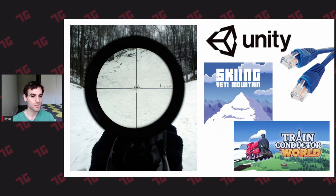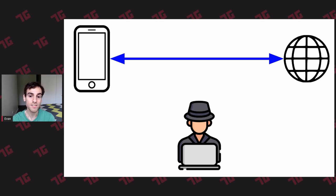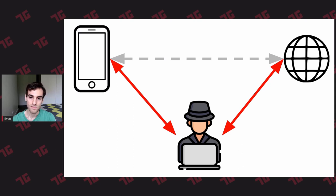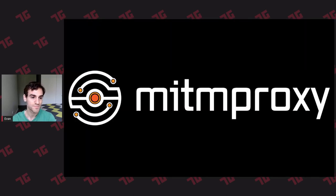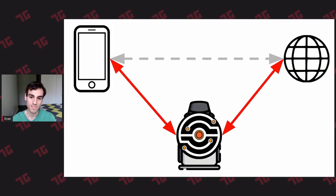Normally when your phone connects to the internet it just connects directly. But I want to be the person in the middle, intercepting these requests. Before the phone goes to the internet, it first goes to me, and I reroute those requests to the internet on behalf of the phone. When the internet responds, I route it back to the phone. The way I do this is using a program called mitmproxy — man-in-the-middle proxy. You install it on a device, tell your phone to connect to it, and you become the man in the middle, able to intercept, read, and change all the requests coming through.